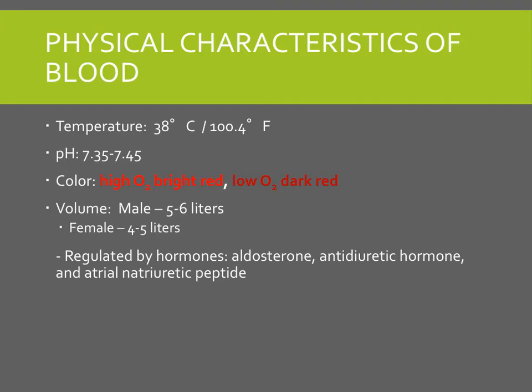Volume: males have a little bit more volume of blood than females. Males have about 5 to 6 liters, and females 4 to 5 liters. Obviously these are averages depending on if you're taller, shorter, etc. Blood is also regulated by hormones including aldosterone, antidiuretic hormone, and atrial natriuretic peptide. I'll talk a little bit about these in the heart chapter and a lot more about them when we get to the urinary system.